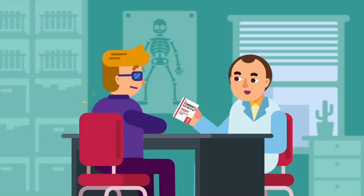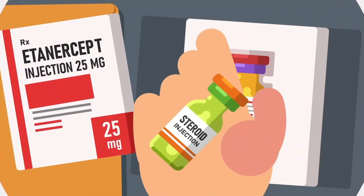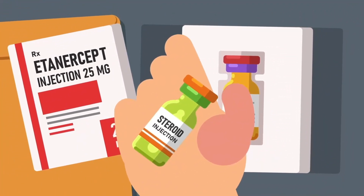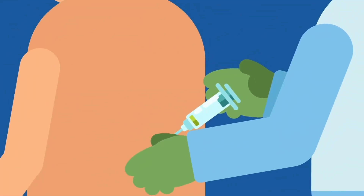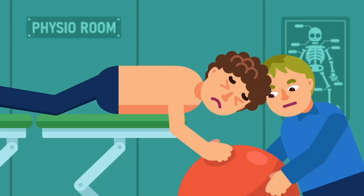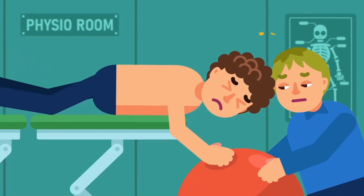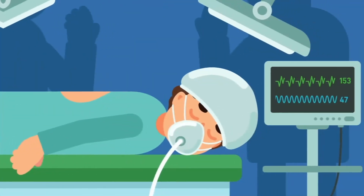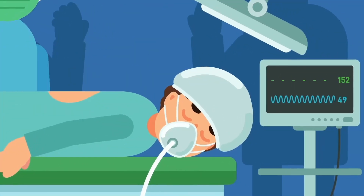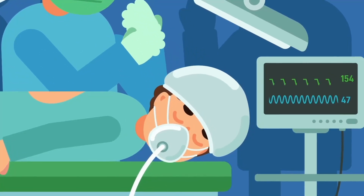Your rheumatologist would guide you if you need biological therapies. Steroids are used as a short-term treatment for flare-ups and are usually given as an injection into a swollen joint. Physiotherapy helps exercise your back and neck to avoid them stiffening into a bent position. Surgery is not required for most patients, but can be recommended for some.